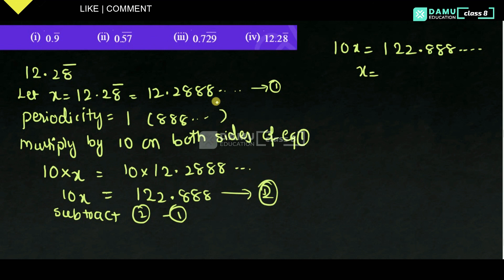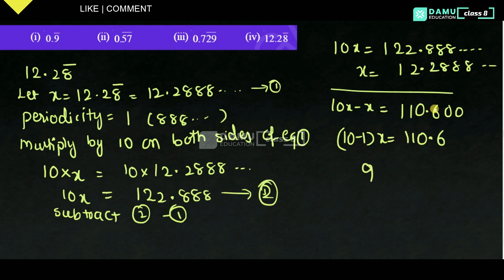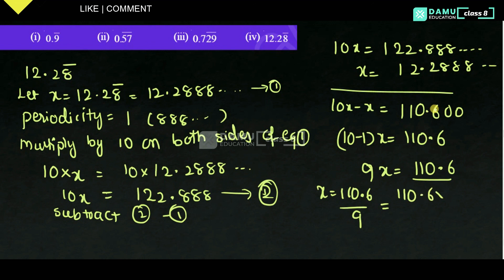Subtract equation 2 minus equation 1: 10x equals 122.888... minus x equals 12.2888... So, 10x minus x — 8 minus 2 will be 6, 2 minus 2 will be 0, 2 minus 1 is 1. So, 10 minus 1 into x equals 110.6. Then 9x equals 110.6. Then x equals 110.6 by 9. Multiply and divide with 10: 1106 by 90.